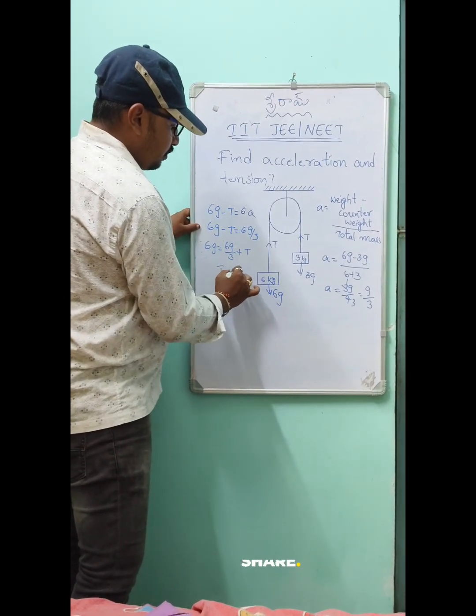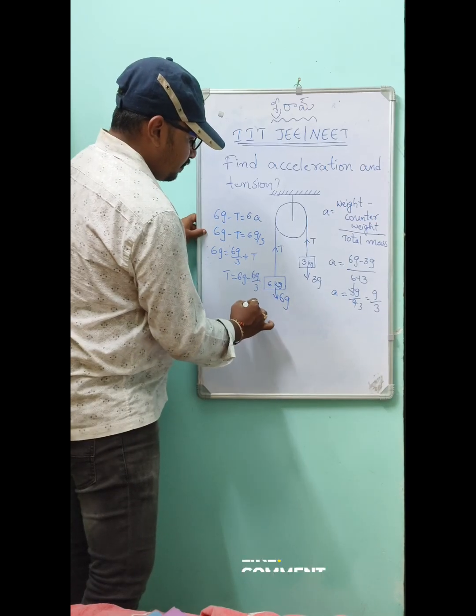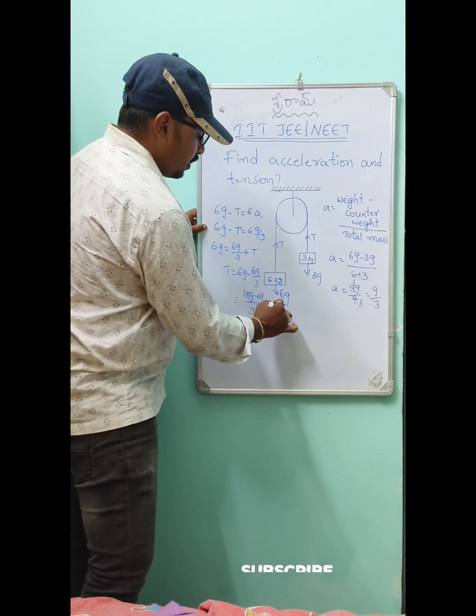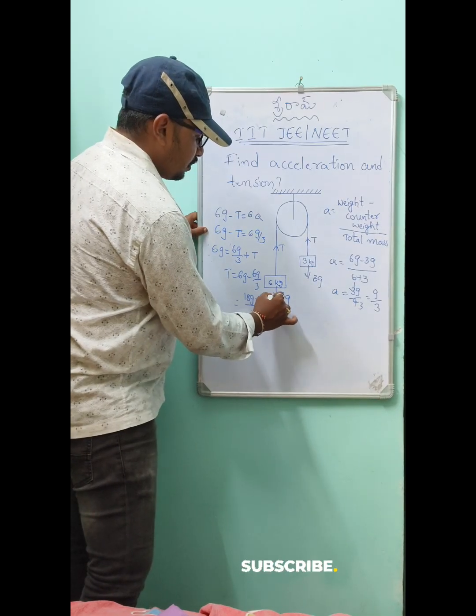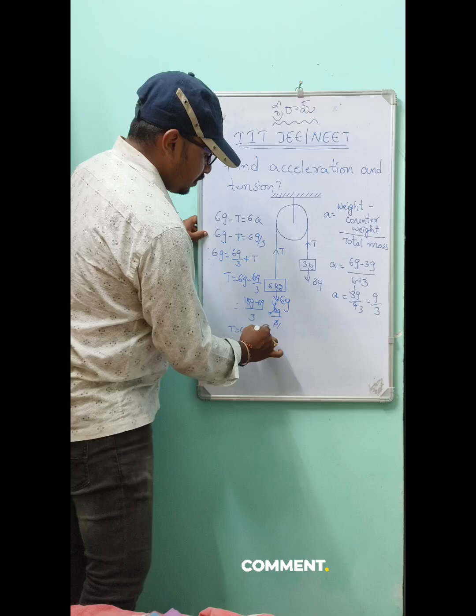Taking the LCM of 3, this becomes 18g minus 6g divided by 3, which equals 12g by 3. Simplifying to 4g, and taking the g value as 10, the tension becomes 40 newtons. This is the shortcut to find the tension.